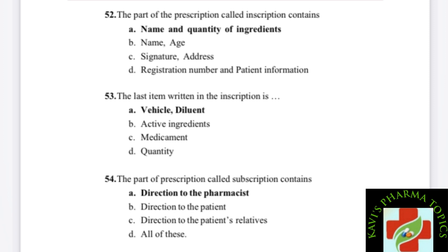Next question: what does the inscription contain in terms of vehicle and diluent? Option A: vehicle diluent. Option B: active ingredient. Option C: medicament, absentee, quantity. The right answer for inscription content is vehicle and diluent.